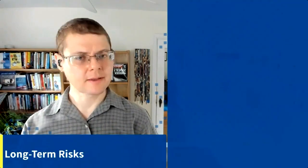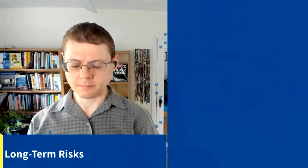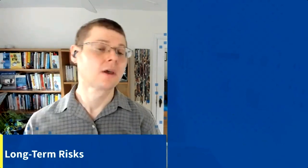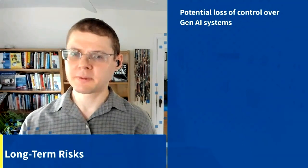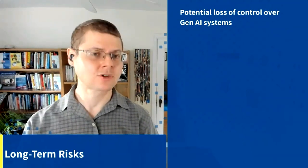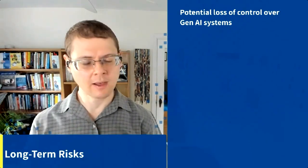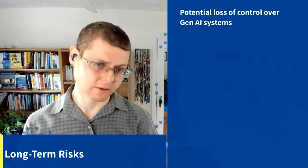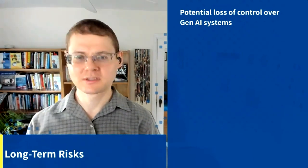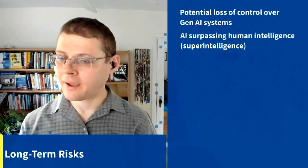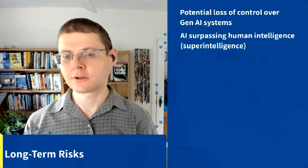In the long term, something to be aware of as a socially responsible corporate citizen is potential loss of control over generative AI systems. Imagine generative AI deployed as a virus that constantly evolves — it could do far more damage than the CrowdStrike accidental bug. Such a scenario presents serious risks that need to be considered.